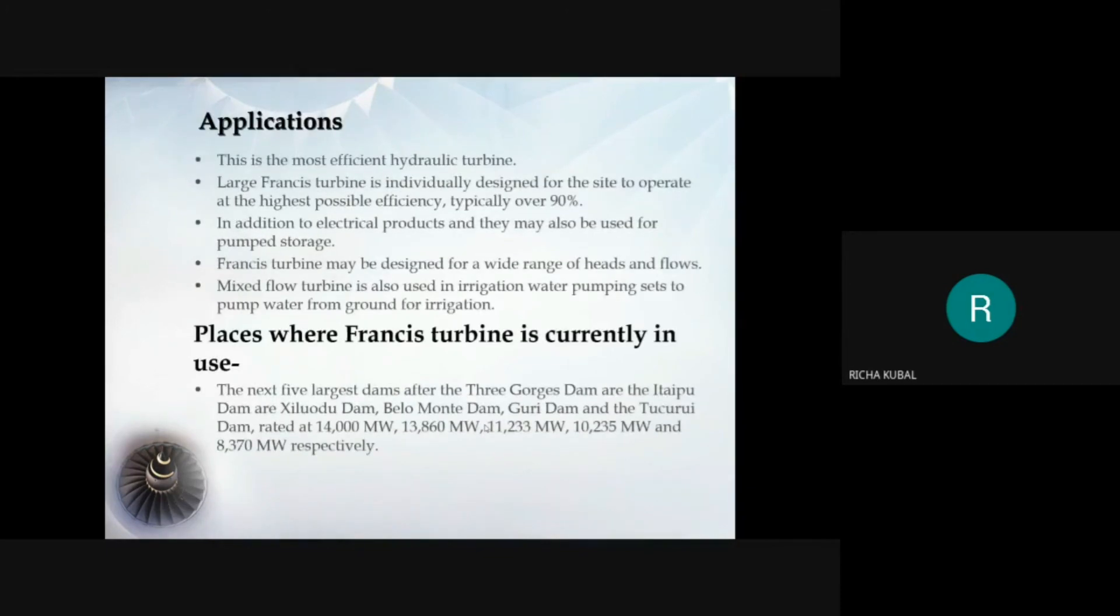Applications. It is one of the most efficient hydro turbines and it works on wide range of head and flow rate, and is one of the most widely used turbines used to generate electricity. In addition to this, it is also used in pumped storage systems for irrigation purposes. Places where Francis turbine is currently used is in China for the Three Gorges Dam and also in Brazil in the mentioned places.